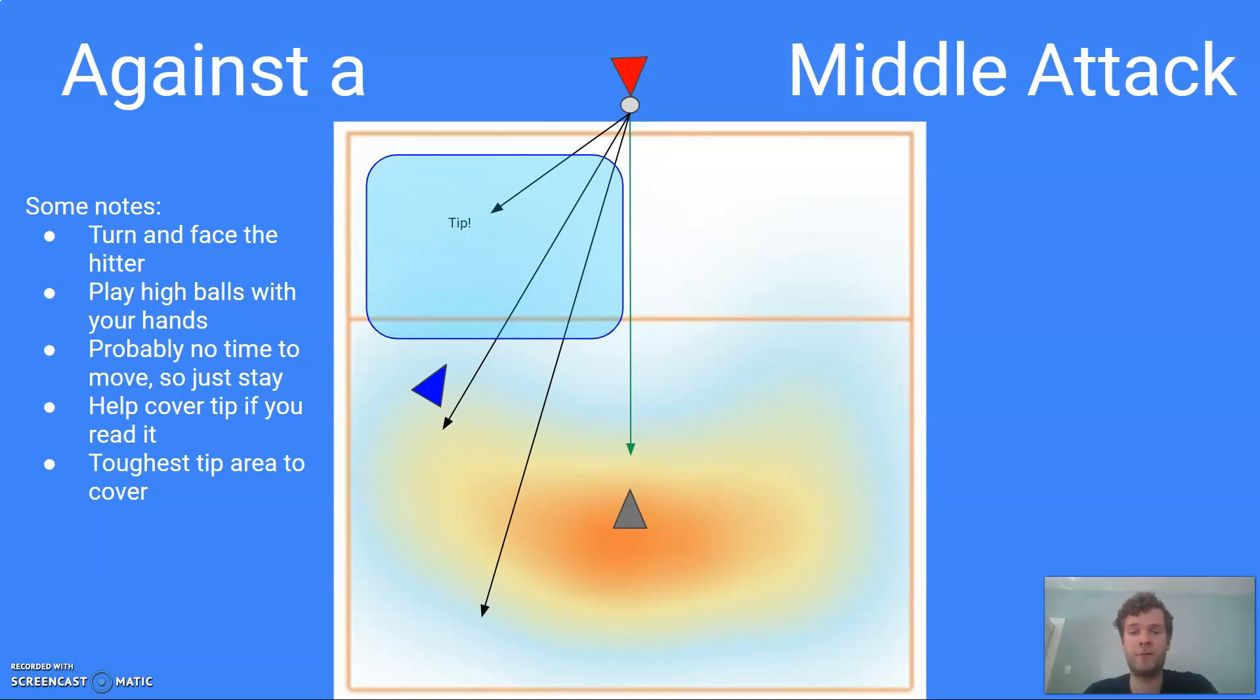So against the middle, we stay in base. And this is going to be true for all of our back row defenders against a standard middle attack. That's what we're really going to be talking about in this video - like a middle is attacking in the one, running a fastball on the one or even a two right there next to the center, middle of the court. We stay in base and just turn and face.